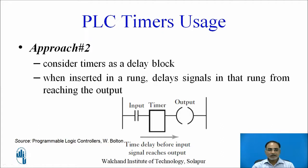In the second approach, you consider the timer as a delay block. You insert the timer in a rung as shown in the figure. What the timer does is add a delay, causing the signal in the rung from reaching the output to be delayed. This is the second approach you can apply for using a timer in simple ladder rungs.